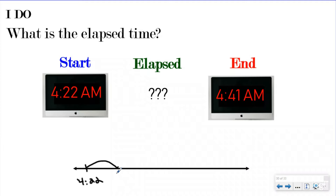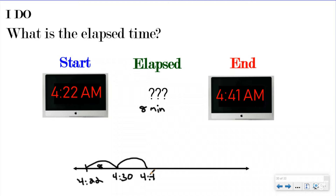I make a leap to get to 4:30 — that's my first step, a hill to my friendly number. I need to write down how many minutes that is: 22 plus 8 is 30, so my first elapsed time was 8 minutes. I'm not at 4:41 yet. Now I want to make a hill to the closest friendly number to 4:41, which would be 4:40. From 4:30 I go to 4:40 — that's obviously 10 minutes. I write 10 minutes underneath my elapsed time. Now I'm at 4:40.